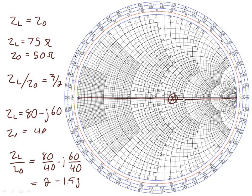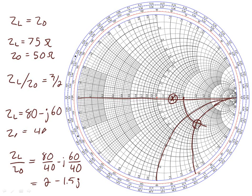The value 2 corresponds right there on the real axis. Since j is negative here, we move along these lines on the Smith chart downward until we find the line that represents 1.5 — and it turns out to be this line right here. So the way we find it is we take our value of 2 on the real axis, drive along this way until it intersects, and this point right here is equal to 2 minus 1.5j.